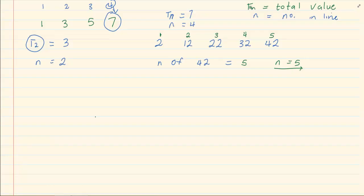So we need to understand what is tn and what is n. In this case, n of 42 is 5, but tn of 5 is 42.